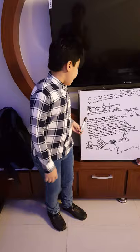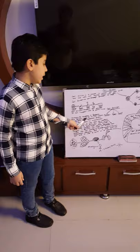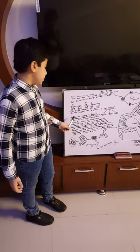Amitosis happens in bacteria and in unicellular organisms. Unicellular organisms are those organisms that are made up of one cell. Blue-green algae also undergo amitosis — it is a biological plant. In amitosis, first the nucleus divides and then the cytoplasm divides.